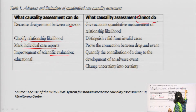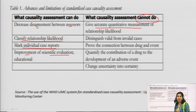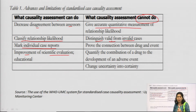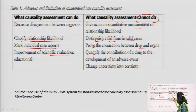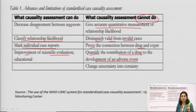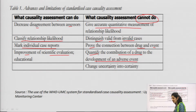Causality assessment can decrease disagreement between assessors, classify the likelihood of a drug-ADR relationship, and mark individual case reports. It can also improve scientific evaluation. However, it cannot give accurate quantitative measurements, cannot distinguish valid from invalid case reports, cannot prove the connection between drug and events, cannot quantify the contribution of the drug to disease development, and cannot change uncertainty into certainty — it only provides a likelihood estimate.